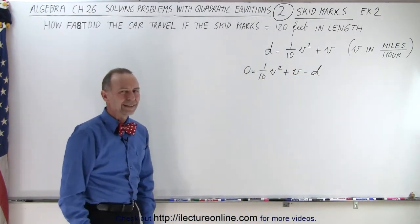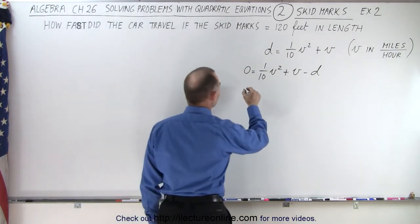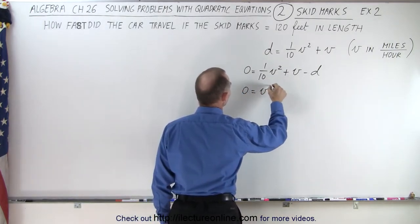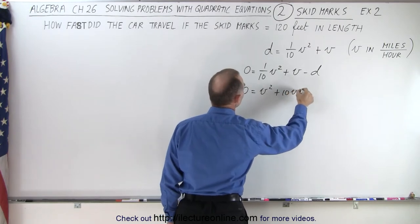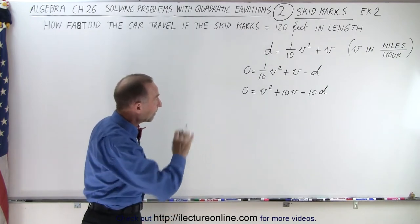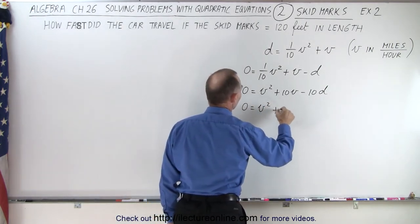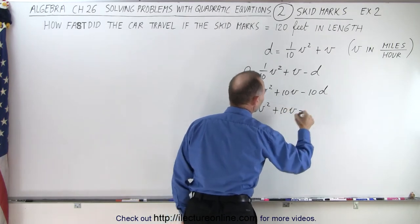And to get rid of that 1/10 in the front, I'm going to multiply everything by 10. So we get zero equals v² + 10v - 10d. And now let's plug in some numbers. For d we have 120 feet.